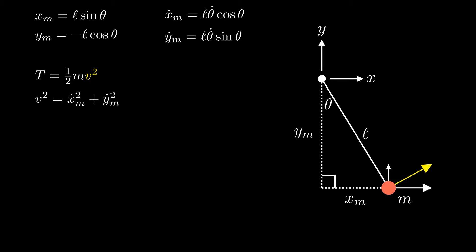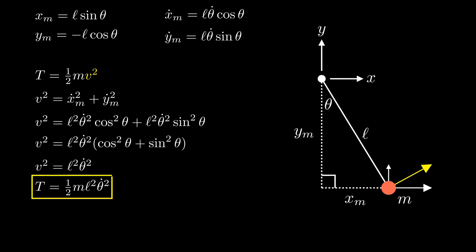We plug in our expressions for x dot m and y dot m, and then simplify to get an expression for v squared. Finally, we plug this into our expression for the kinetic energy, and we get our final expression in terms of theta.